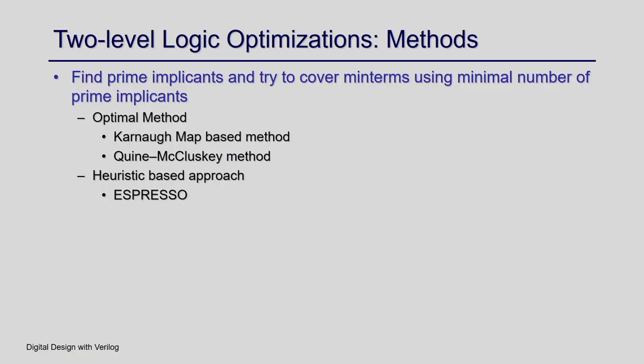In the last three classes, we talked about Karnaugh map and the Quine-McCluskey based method to minimize switching functions. Those methods are optimal, in the sense that if you give a function, they will always give you the minimal expression for it.